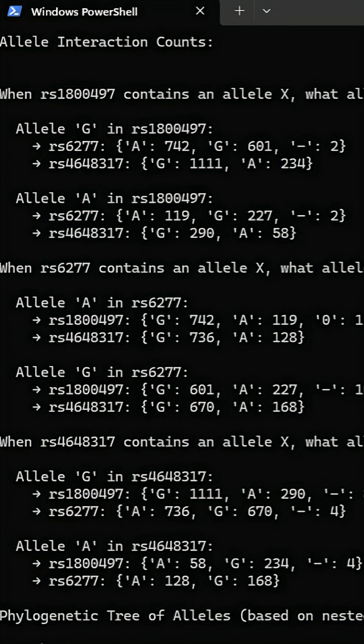What you're seeing here is a breakdown of co-occurrences between three key SNPs: RS-1800497, also known as the TAC1A variant in the DRD2 gene; RS-6277, the so-called no-go learner SNP; and RS-4648317, another variant in the dopamine pathway.